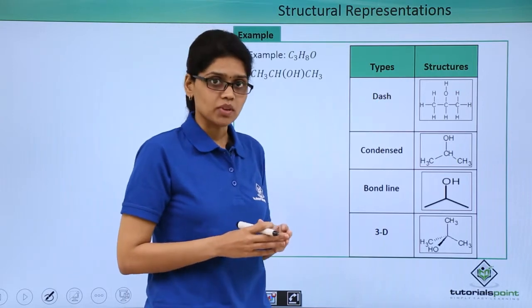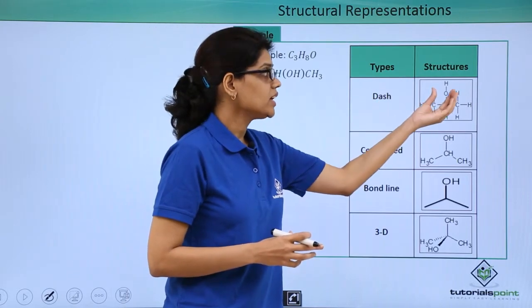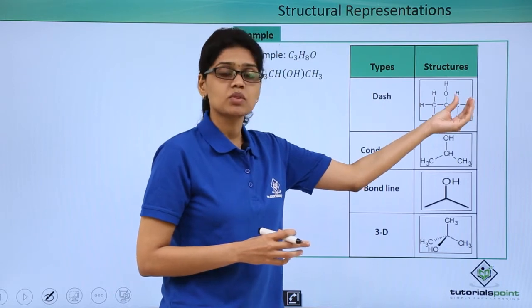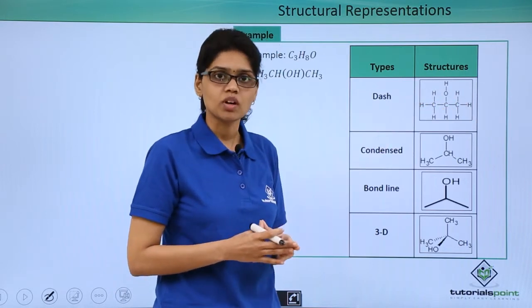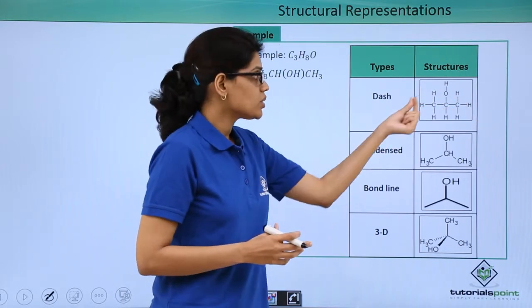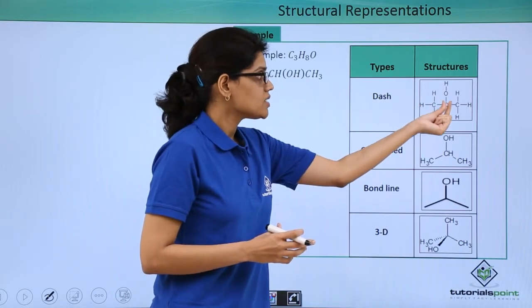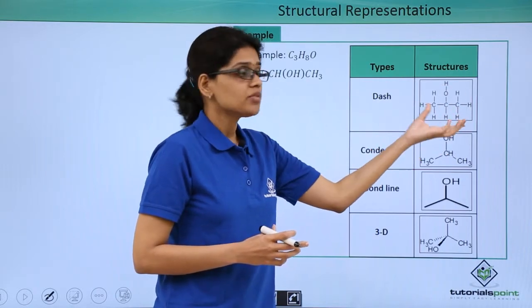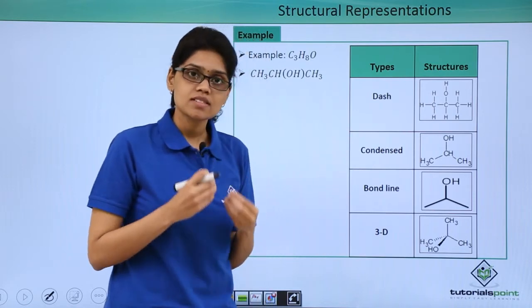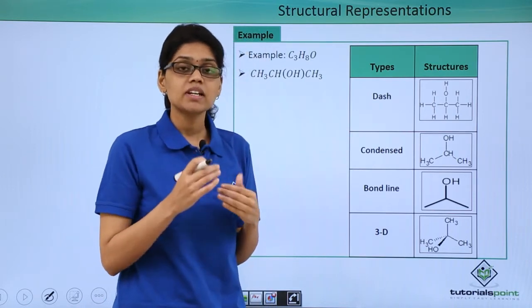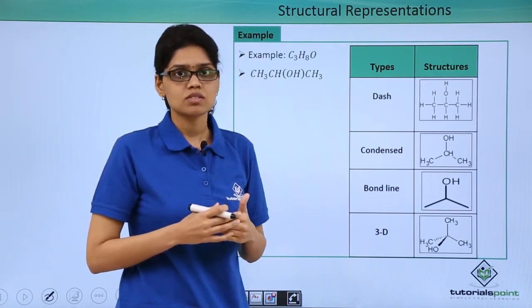In the dash structural formula, we are essentially expanding every atom in such a way to represent all the atoms involved in that given compound. Here we can see CH3, COHH, and CH3. If you look at it closely, you can see that this is nothing but an extended version of Lewis dot structure.